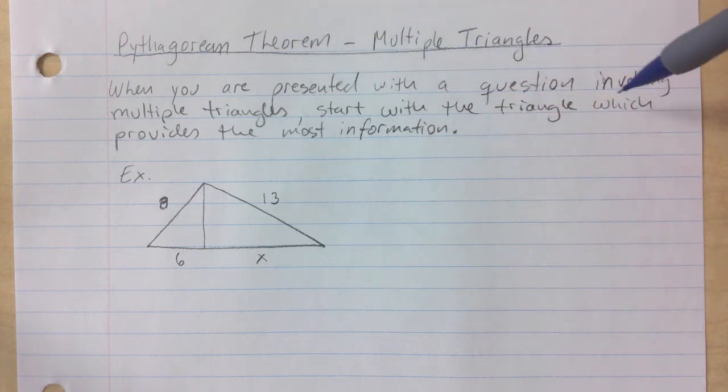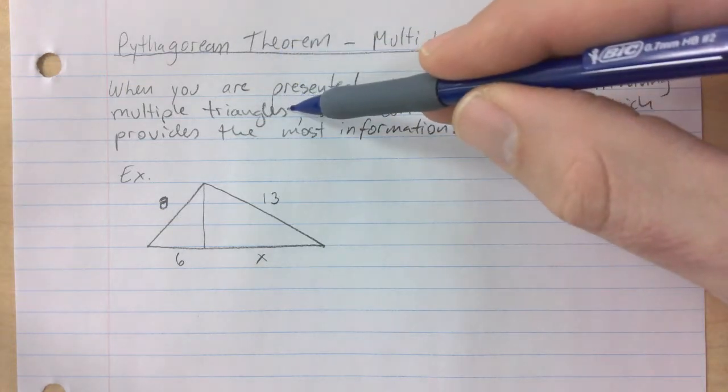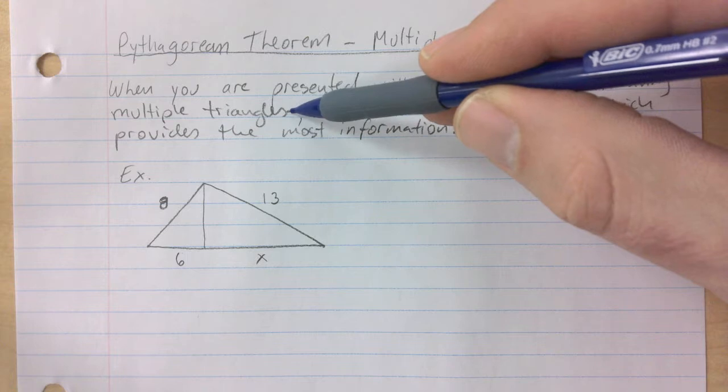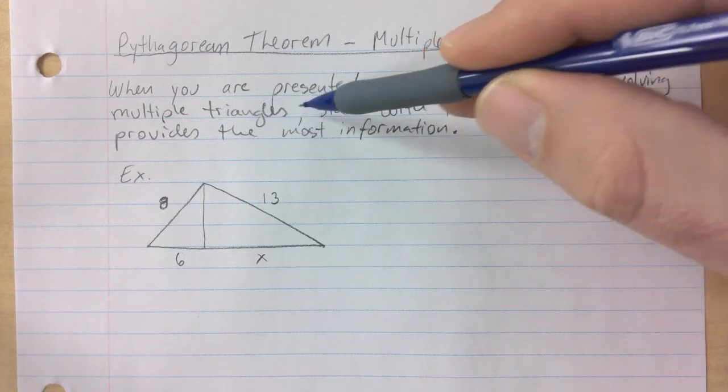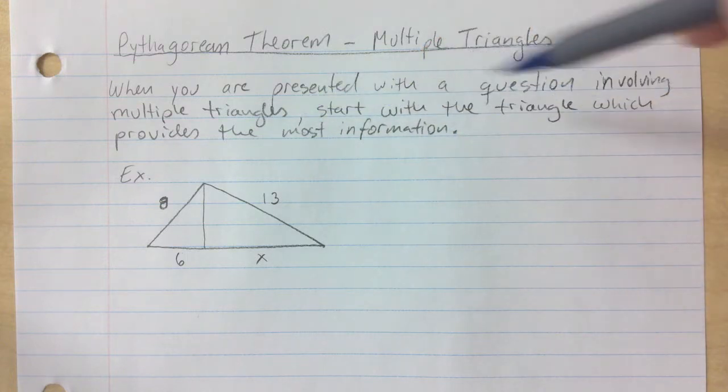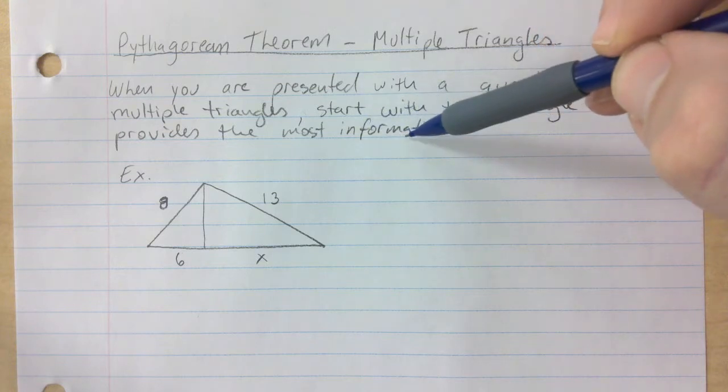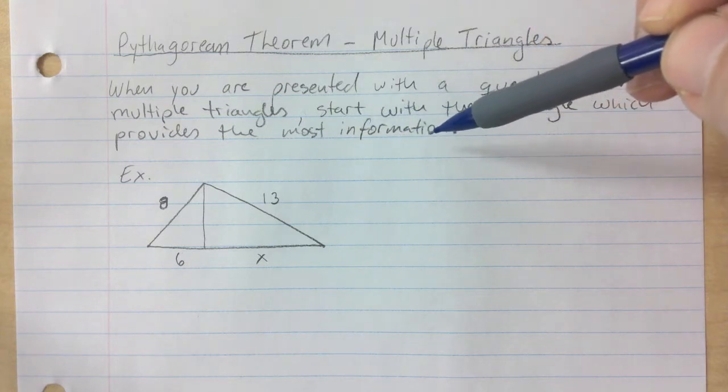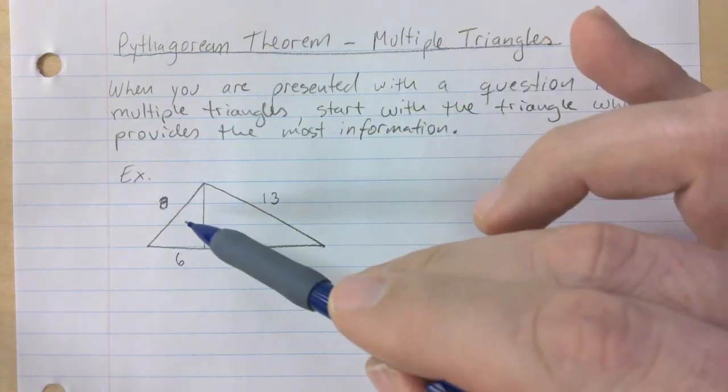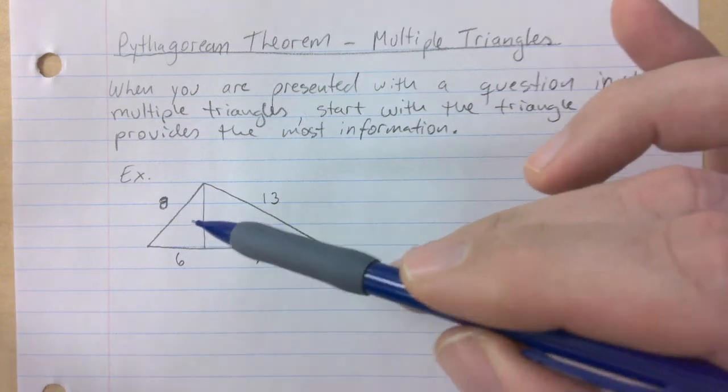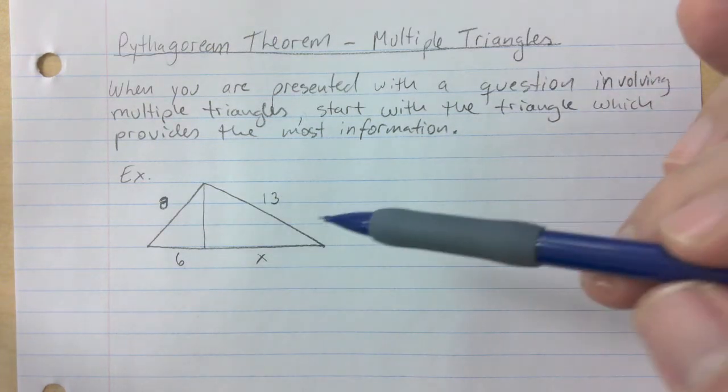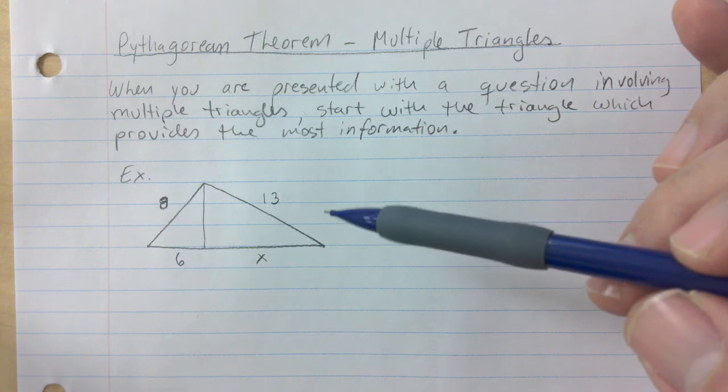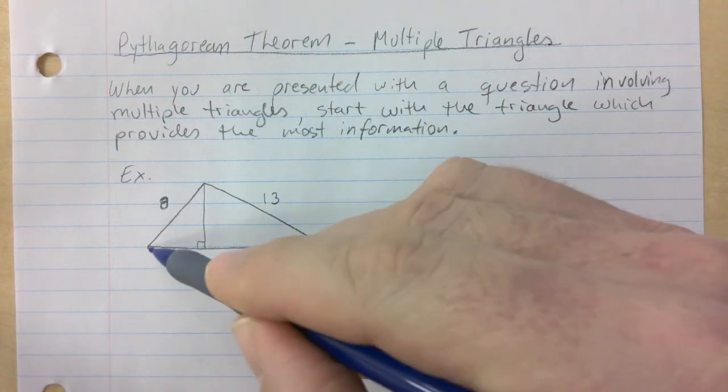When you're presented with a question involving multiple triangles, you'll have one inside the other or whatever the case may be. Start with the triangle which provides the most information, that's the key here. You should see three triangles actually, but we only focus on the right triangles.